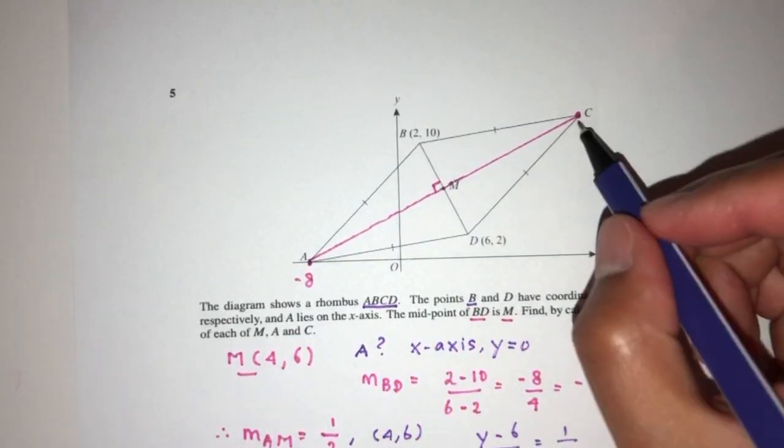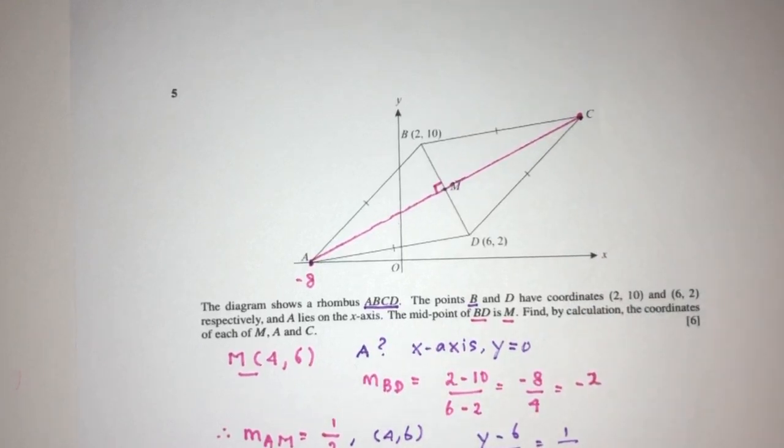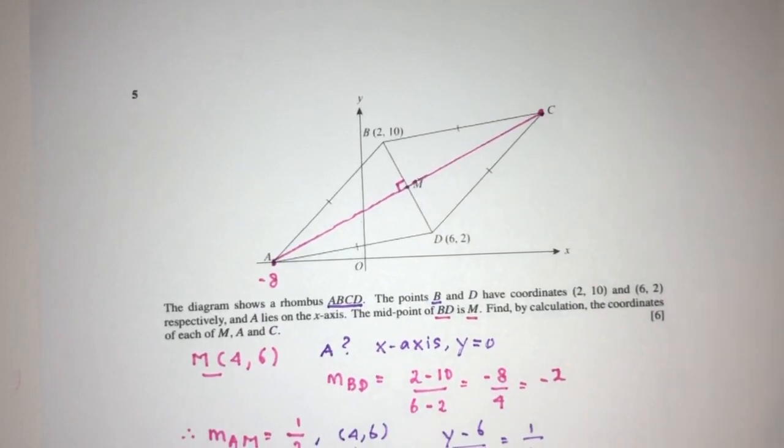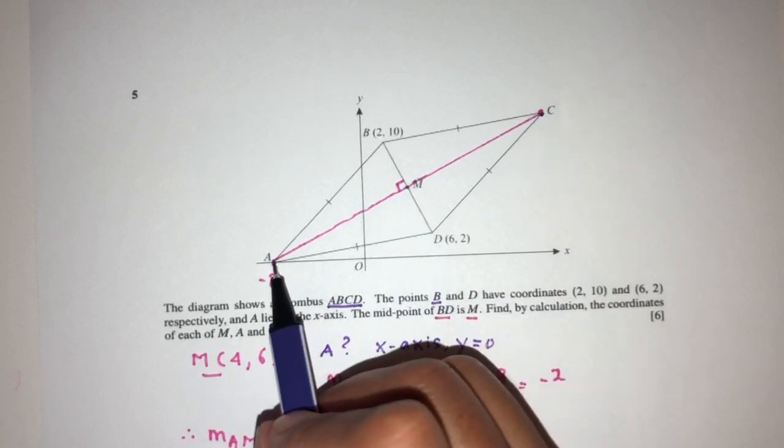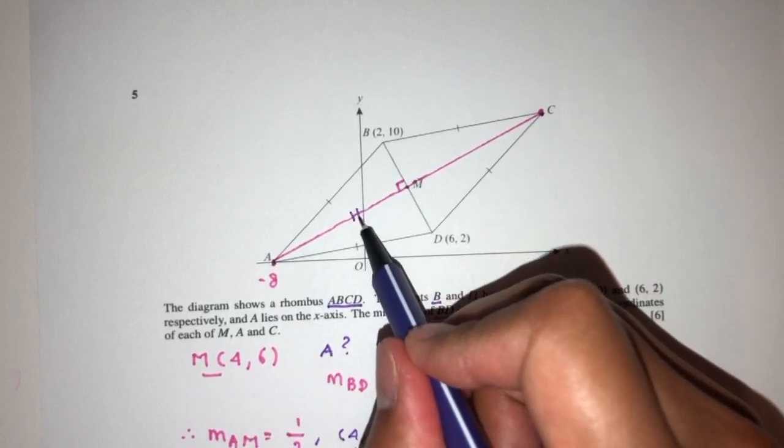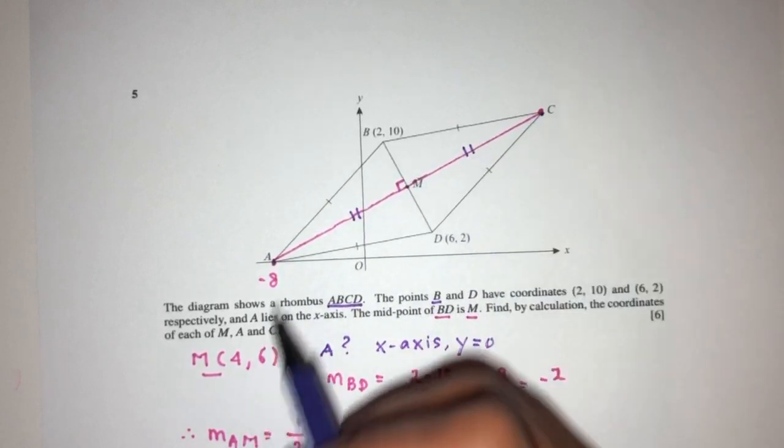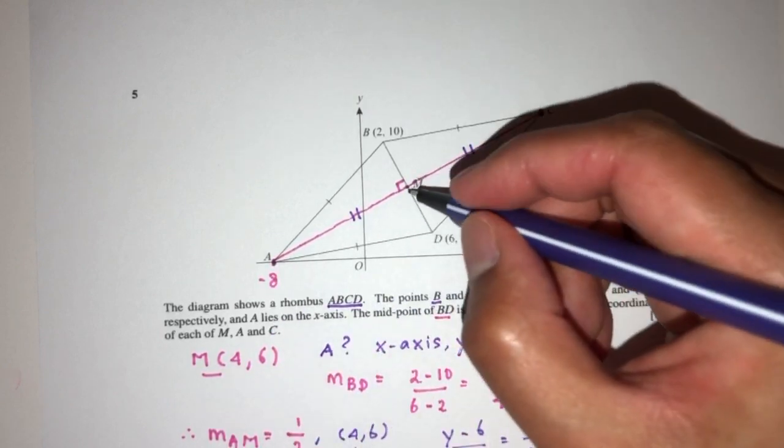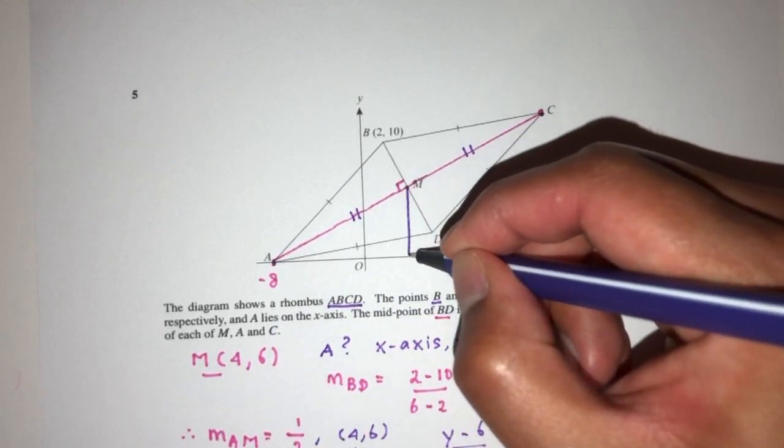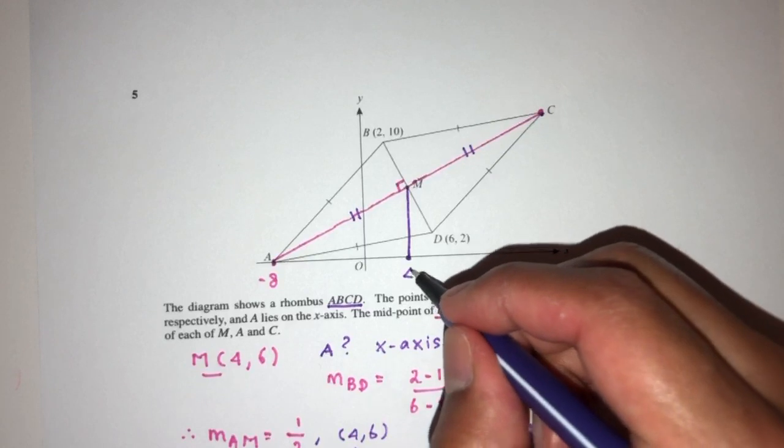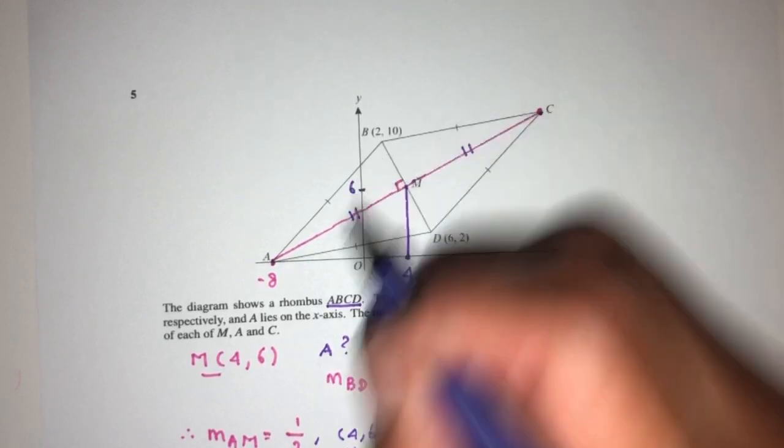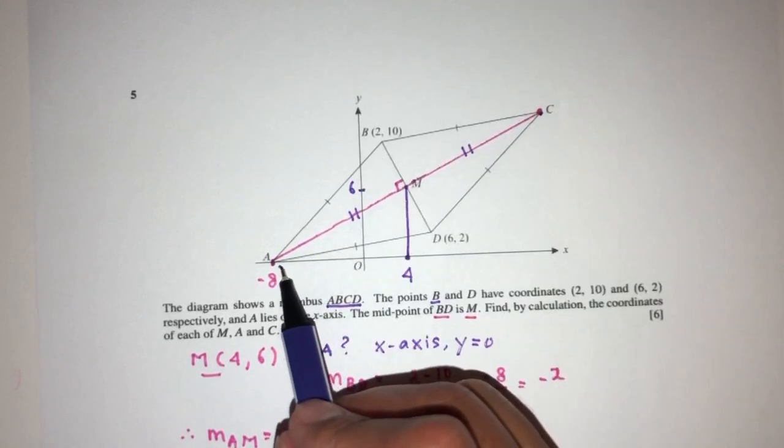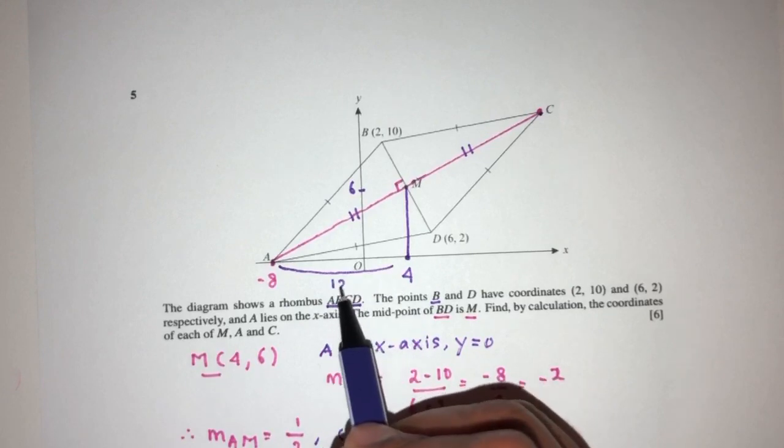Now to find the point C is pretty easy as well. We just have to use vector displacement. For example, from the point A to go to M, we have to, because we understand that AM is the same length as MC. So M going to M. This is the value of 4 here and the height is 6. So we have to move 12 and 6.